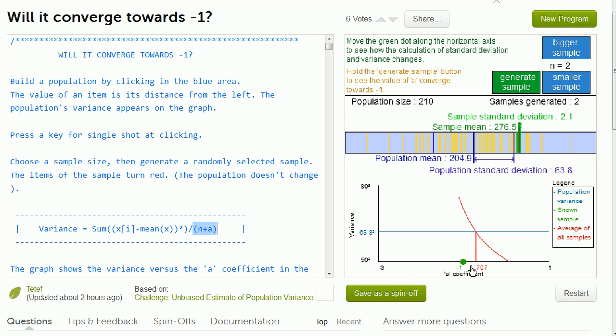We see kind of this curve. When we have high values of a, we are underestimating. When we have lower values of a, we are overestimating the population variance. But that was just for one sample, not really that meaningful. It's one sample of size 2.